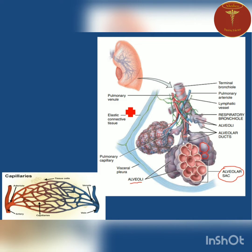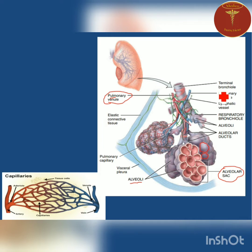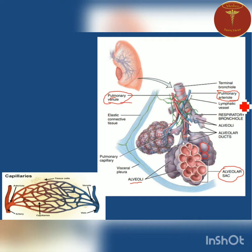The arteries and veins undergo bifurcation. Veins divide into venules, and arteries divide into pulmonary arterioles. These arterioles and venules again divide further to form small blood capillaries.